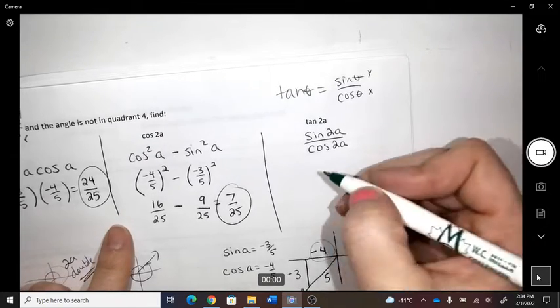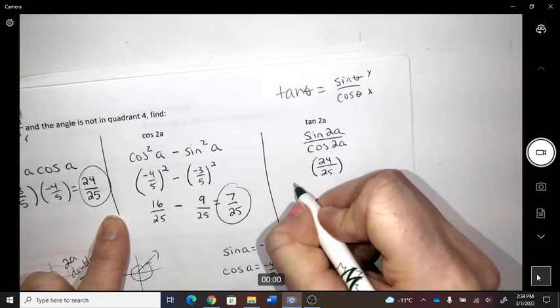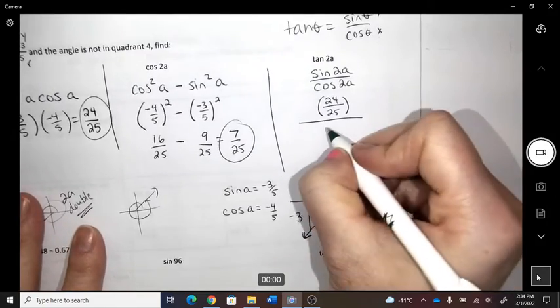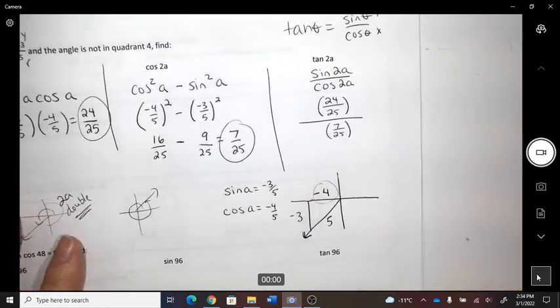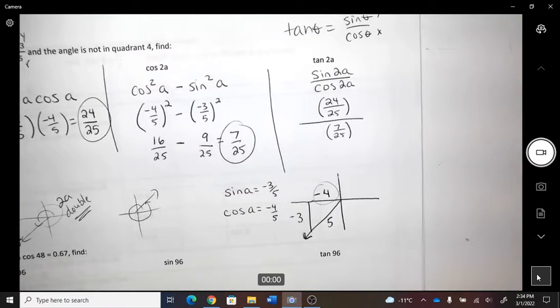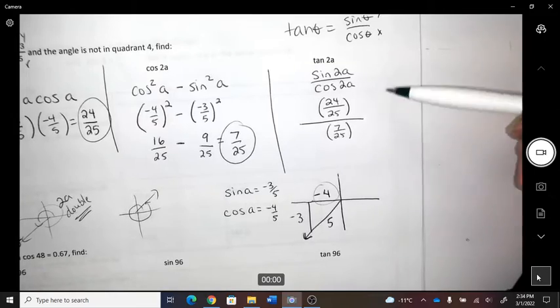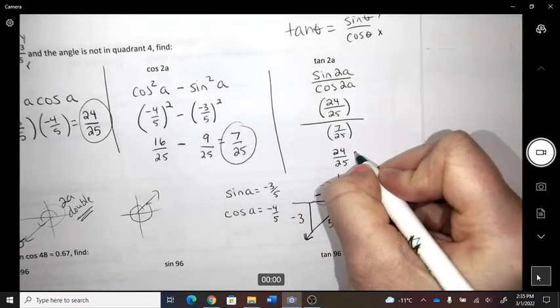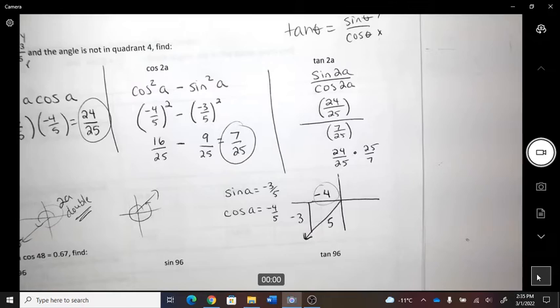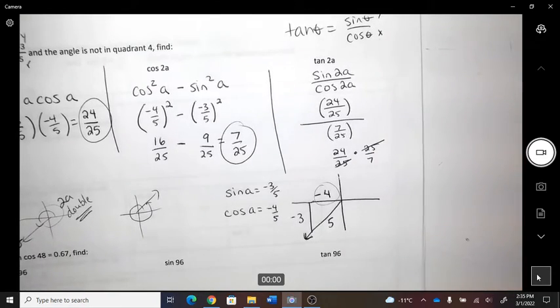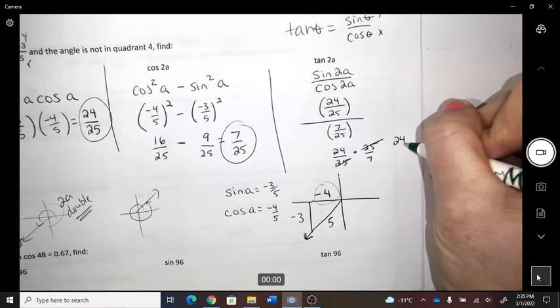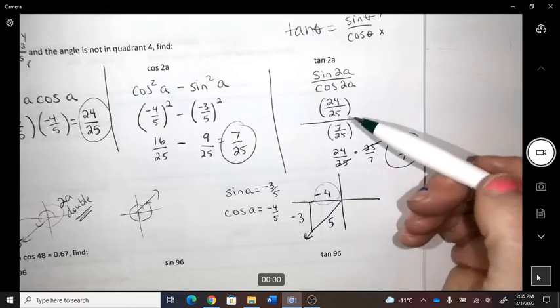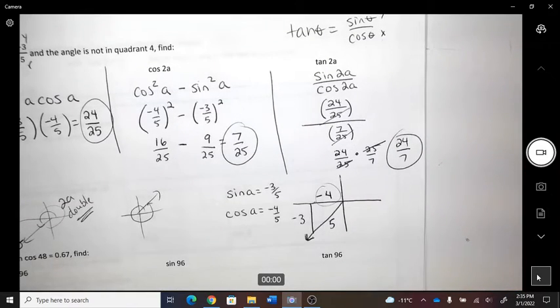So sine 2A, 24 over 25, divided by 7 over 25. If you get math, you would understand you could probably cross those 25s out, and I'm okay with that. If you don't understand what's going on, you could go times and flip. Instead of dividing fractions, you times and you flip. And then they do cross out, so you get 24 over 7. So some of you might have understood if those were both on the bottom. You could have just done that. And that's it.